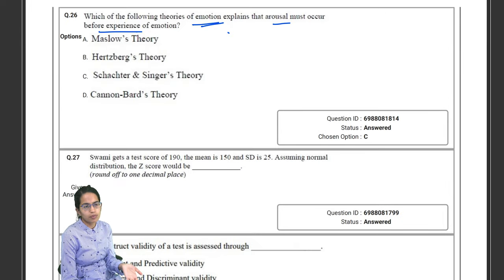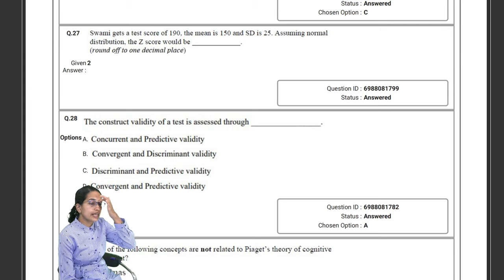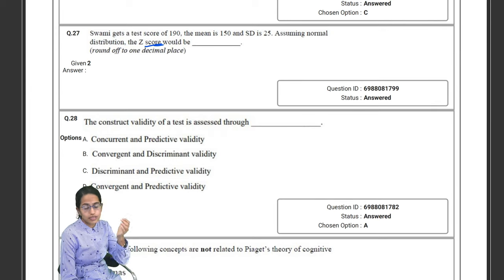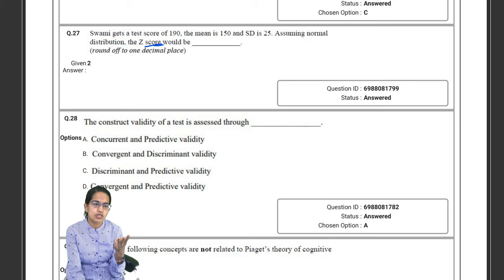So we have covered all the theories of emotion again in detail, and then there are some choices which are actually not part of the emotional theory as well, so you can simply rule those out, like the Maslow's theory. That's a theory of motivation. Then again another question on calculating z-score, so one question on coefficient of variation, one question z-score, so statistics again becomes important.